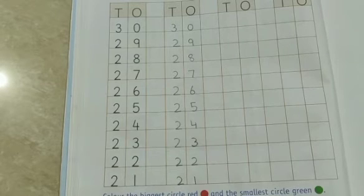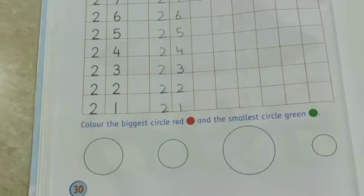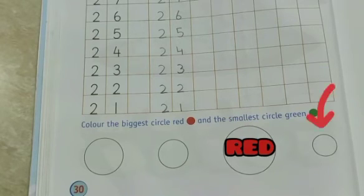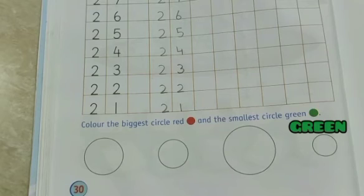And our next question is color the biggest circle red and the smallest circle green. So in this question, we have to color the biggest circle red and the smallest circle green. And this is your homework.